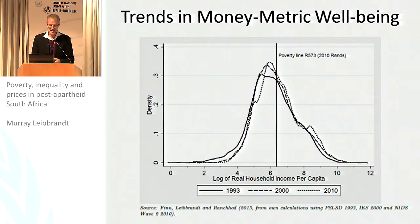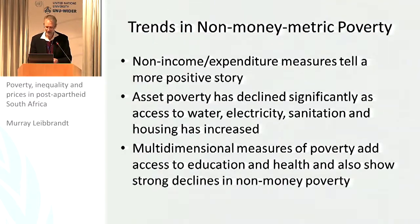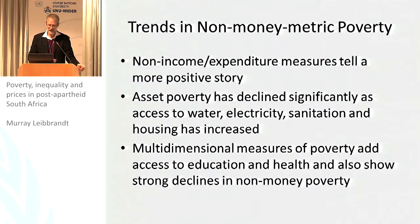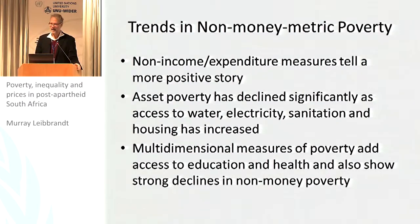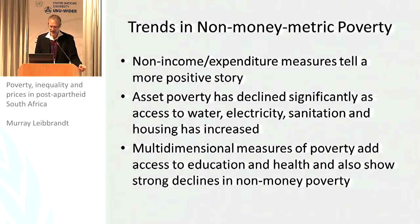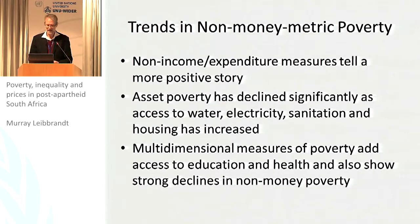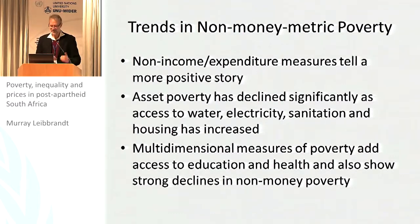The paper spends time documenting that, using 2010 data to splice it into the story to make it contemporary. We also tease out, mostly through a review of existing literature, the non-money metric story, because it is quite interesting — it's a much more positive story. Work by Harun Barat and the DPRU people, as well as by myself and Arden Finn, tell a story of asset poverty that has declined significantly in terms of access to water, electricity, sanitation, and housing. It's clear in all the data — it's a consistent story.